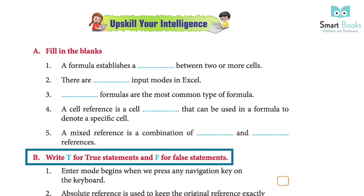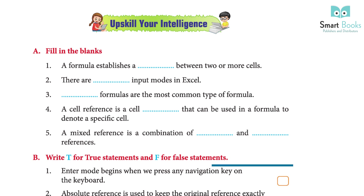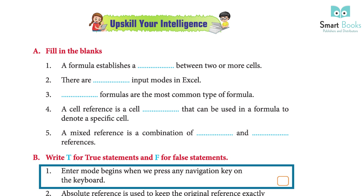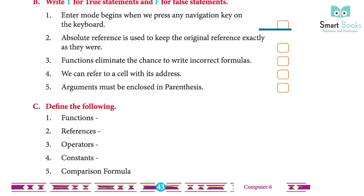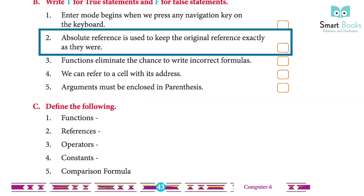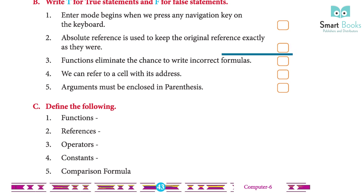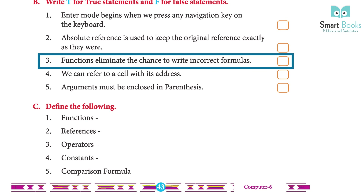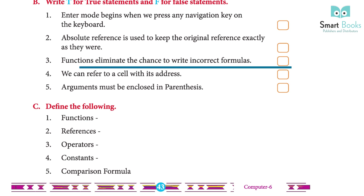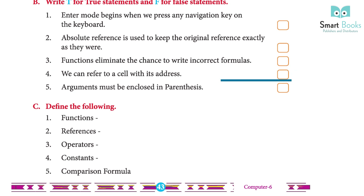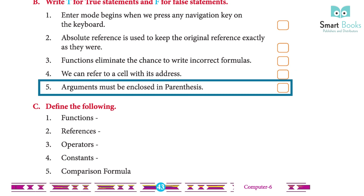True or False: 1 — Enter mode begins when we press any navigation key on the keyboard. Answer: False. 2 — Absolute reference is used to keep the original reference exactly as it was. Answer: True. 3 — Functions eliminate the chance to write incorrect formulas. Answer: True. 4 — We can refer to a cell with its address. Answer: True. 5 — Arguments must be enclosed in parentheses. Answer: True.